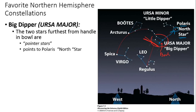Polaris is in the handle of the Little Dipper. You can kind of see the Little Dipper there — that's the handle, and there is Polaris. At the end of the Little Dipper handle is the bowl of the Little Dipper. And of course, Polaris right now is our North Star.